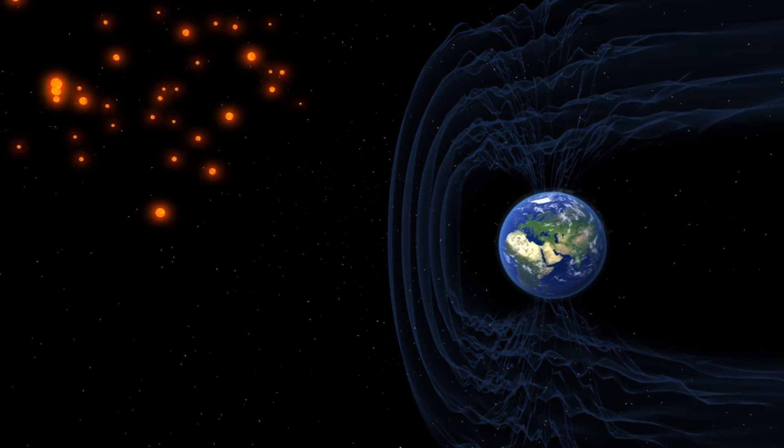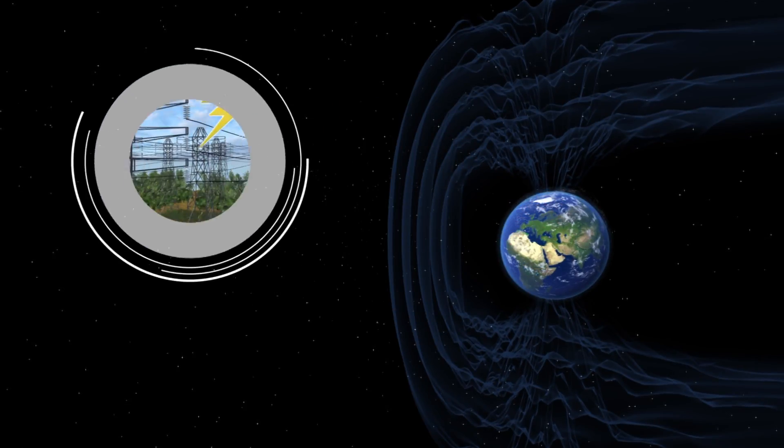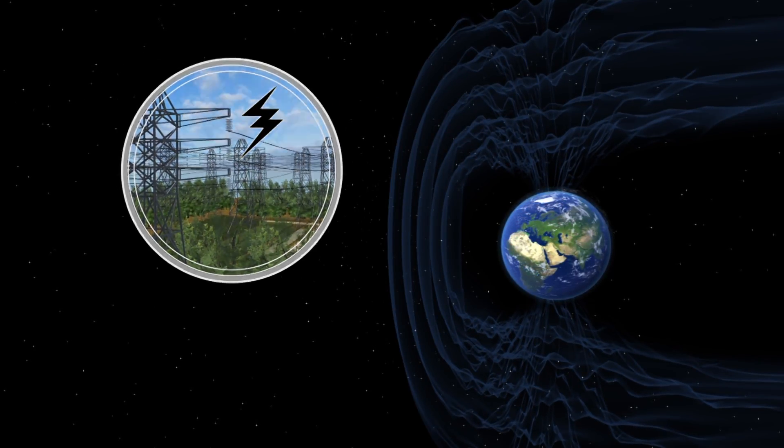Previous studies have suggested that the magnetic field could weaken by about 90 percent during a reversal, which will greatly impact power grids and modern electronics.